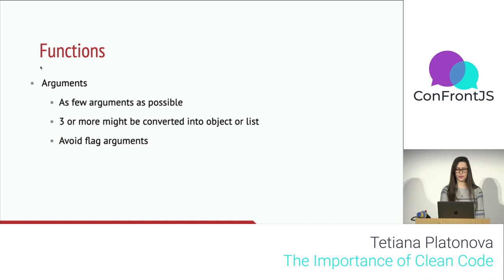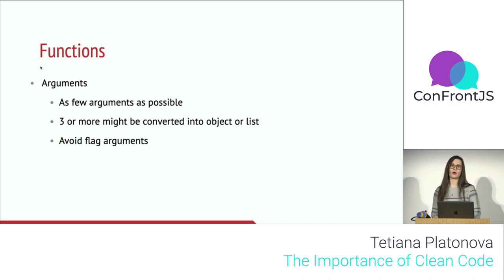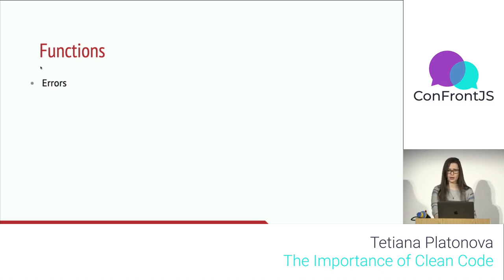Avoid flag arguments: if you pass a boolean argument to a function, it means your function is doing two things — performing either the 'true' action or the 'false' action. This is a sign that your function could be separated into two separate functions.